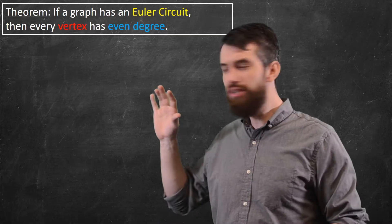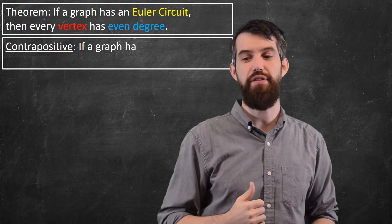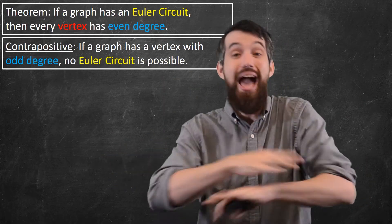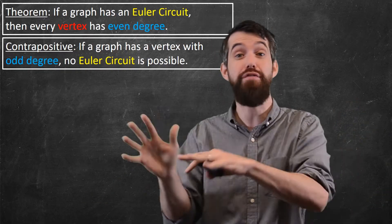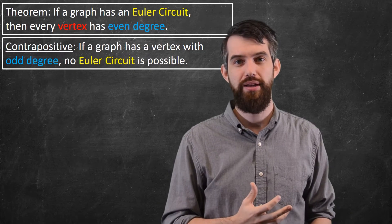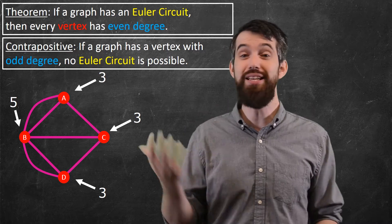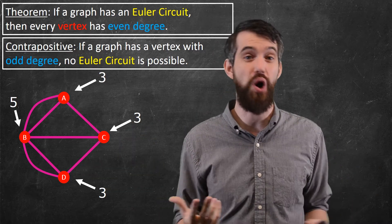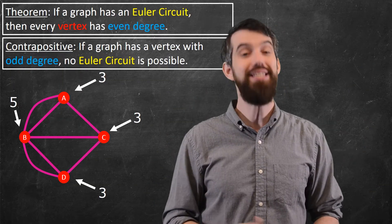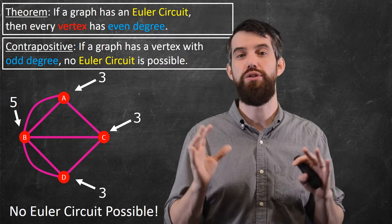Now, this theorem is an if-then statement, and its contrapositive says: if any vertex in the graph has odd degree — even just one — then it is impossible to have an Euler circuit. Let's apply this to our original graph. In that graph, the degree of every single vertex is odd. You only need one to break it, but every single one is bad. So indeed, for this particular graph, there is no possible Euler circuit.